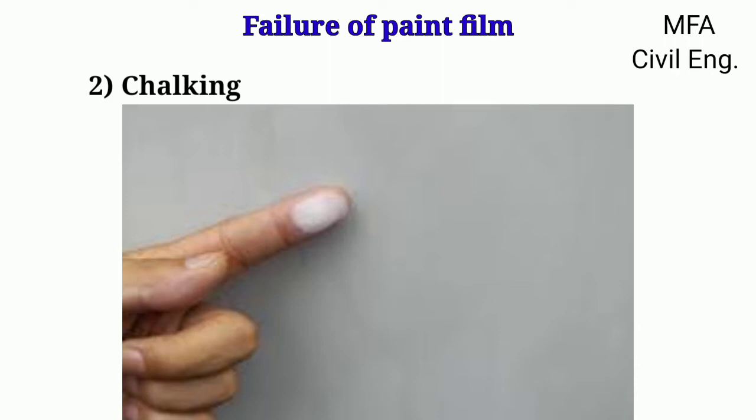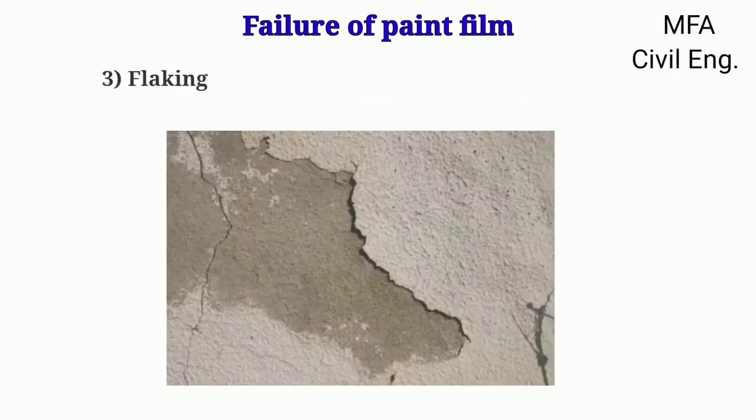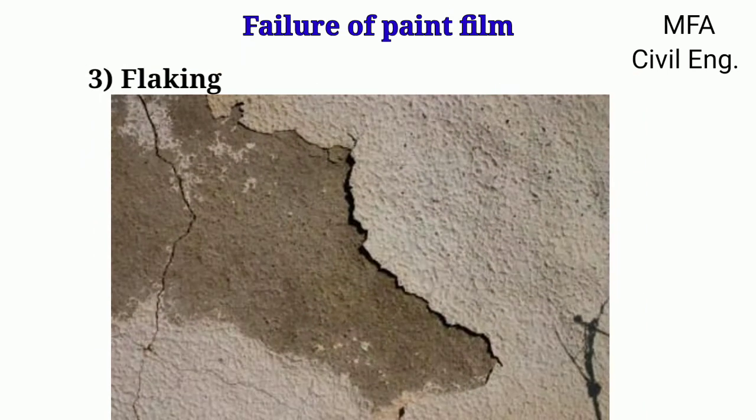Chalking is the progressive powdering of a paint film on the painted surface. It occurs due to the improper dispersion of a pigment in the vehicle, or the destruction of the binder by continuous exposure to light.